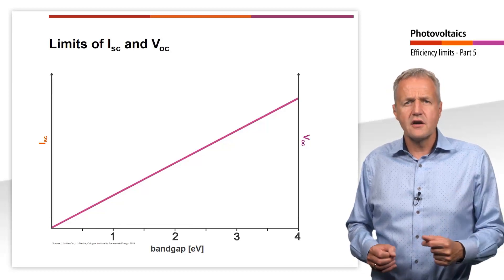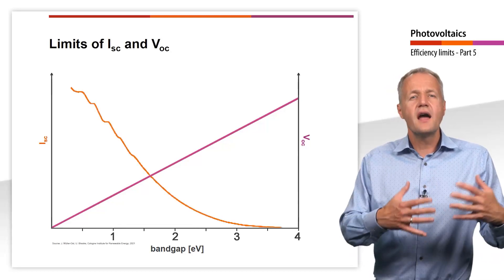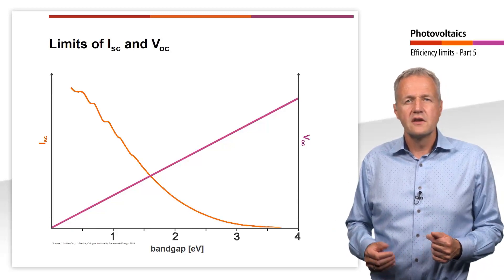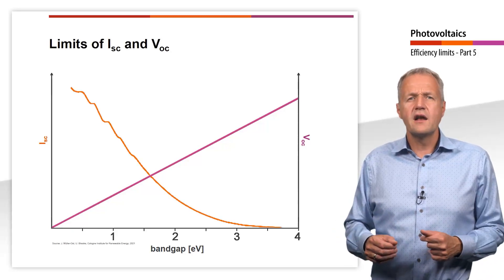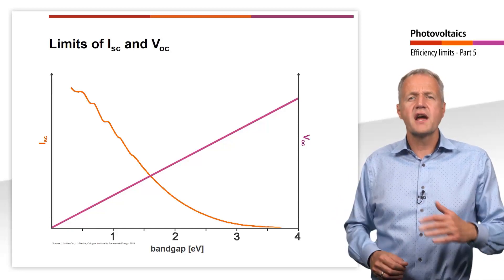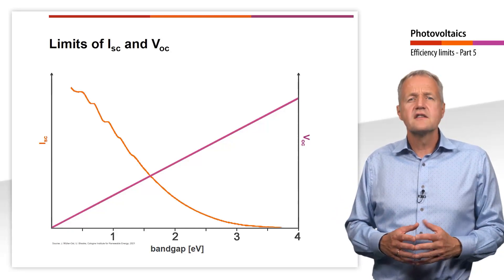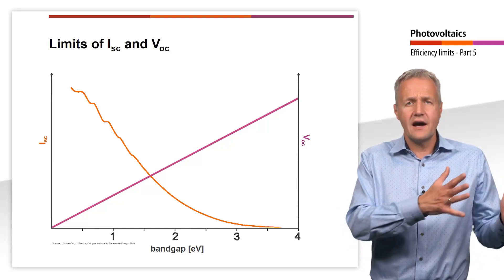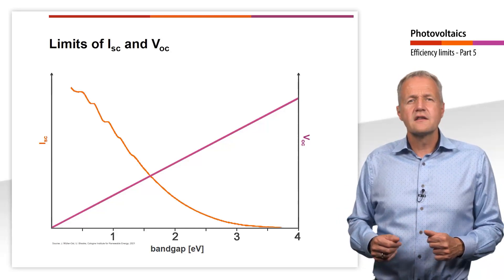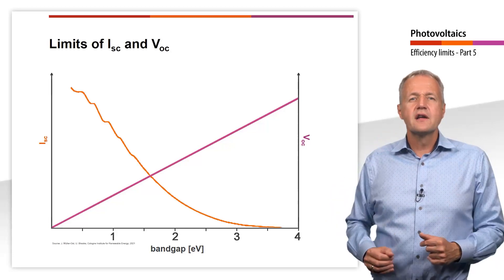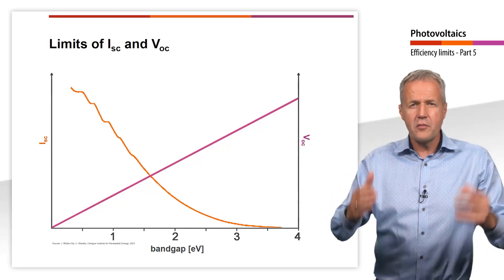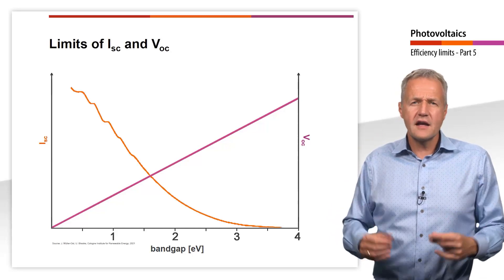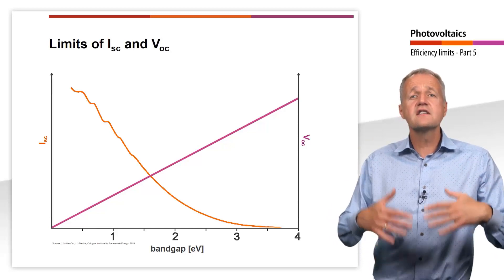The product of open-circuit voltage and short-circuit current is important for the efficiency. Due to the profile of the open-circuit voltage and the short-circuit current, this product is zero for very small and for very large band gaps. Somewhere in the middle, however, a maximum can be found. In other words, there is a band gap for which the efficiency is maximum.